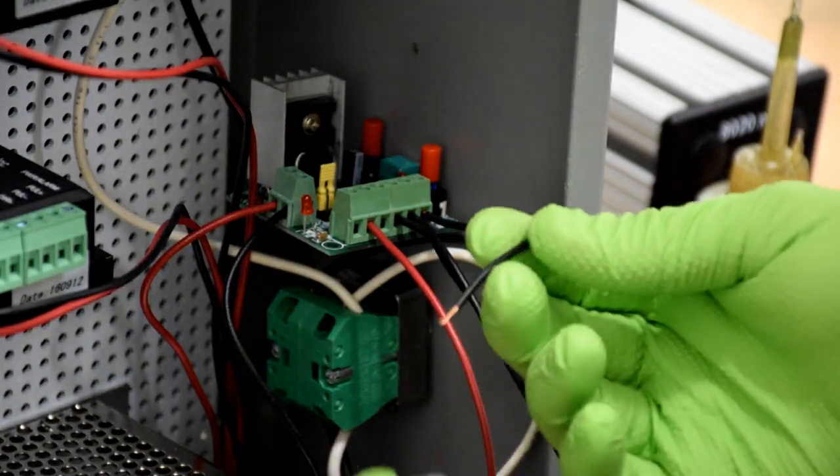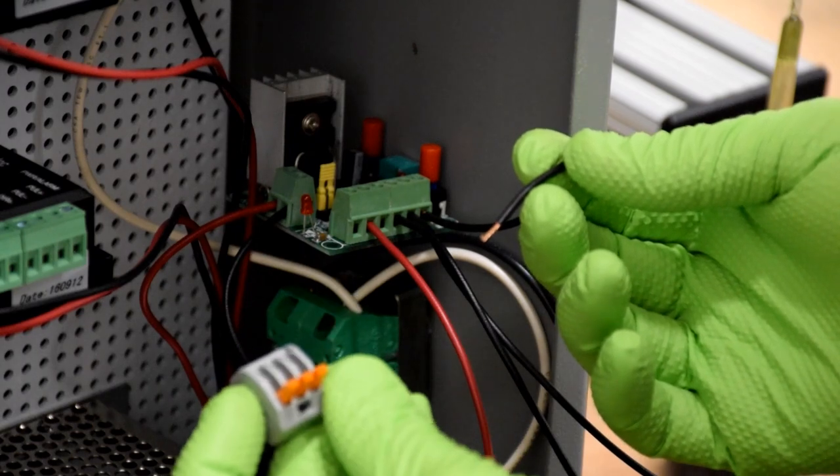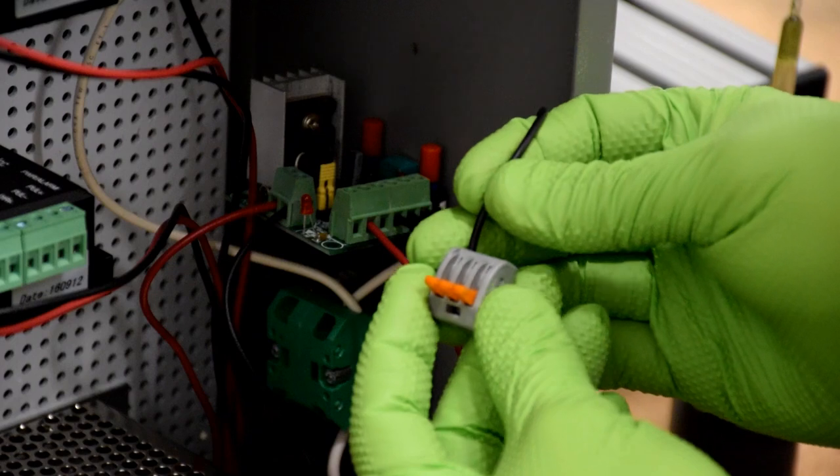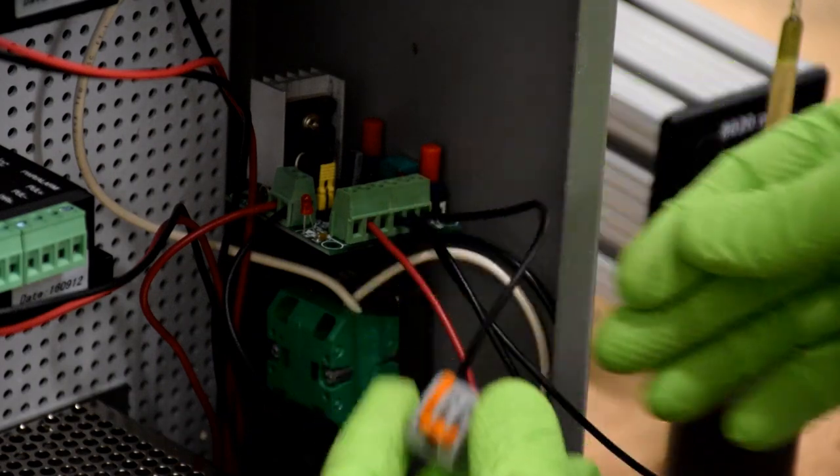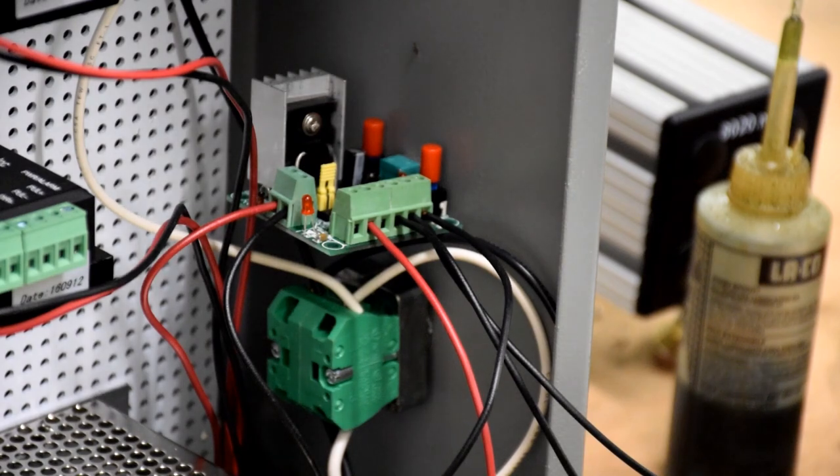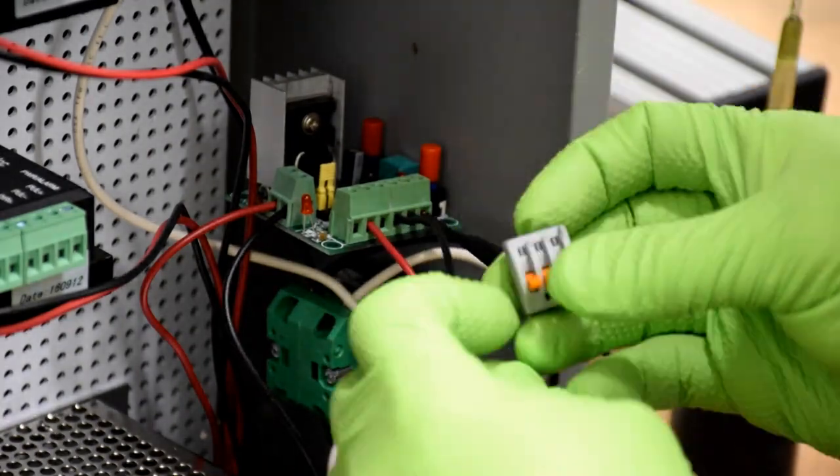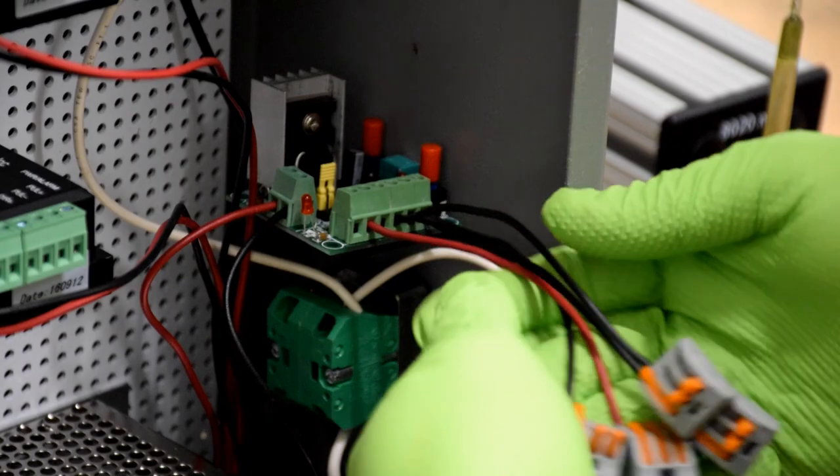Now that the wires are in the terminals we're going to put a three wire block on the end of each wire. Just open up the locking mechanism and insert the wire and snap it shut. It's nice and secure. Repeat that on all of the wires. And there we go.